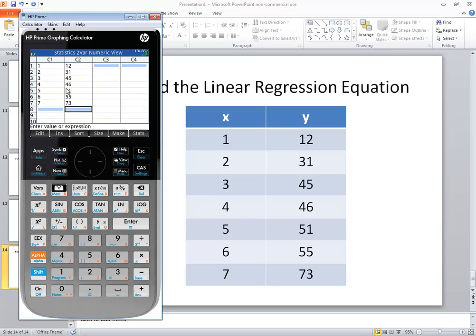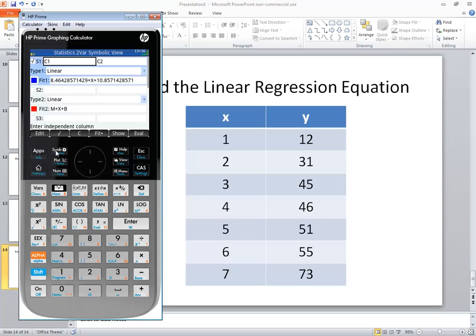And to get to the linear regression equation you go into the symbolic here and S1 should be highlighted or checked. If it isn't, you can click this check mark right here. I'm going to check that. This should be C1, C2. This is where you put your x values. This is where you put your y values. If it doesn't say C1, you can press your C button here, put one in, and then press enter.